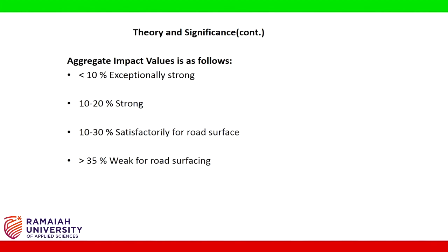Aggregate impact value classification: Less than 10% — exceptionally strong; 10–20% — strong; 10–30% — satisfactory for road surface; greater than 35% — weak for road surfacing.